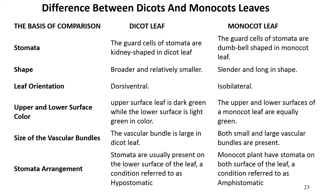The guard cells of stomata are kidney-shaped in dicot leaves and dumbbell-shaped in monocot leaves. The orientation of dicot leaves is dorsiventral, while that of monocot leaves is isobilateral. A dorsiventral organ has two surfaces differing from each other in appearance and structure, whereas isobilateral orientation means the upper and lower surfaces are identical to each other.